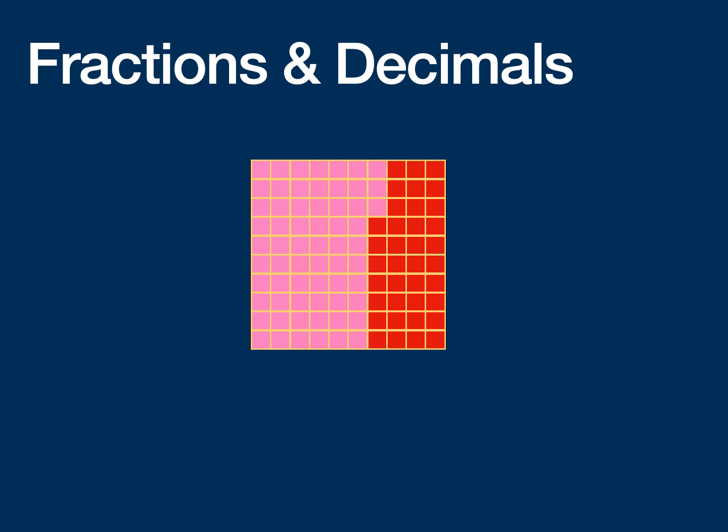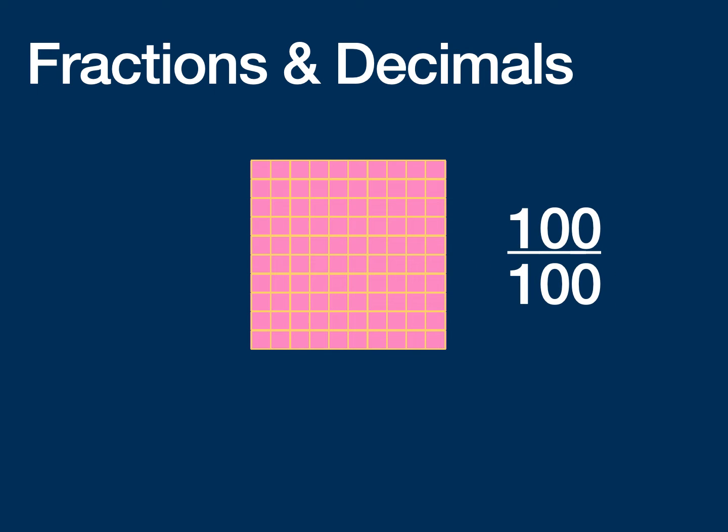And here is 73 pieces, if I'm correct. And that's 73 over 100. And of course, here's the whole thing colored in. So that is 100 over 100, one hundred hundredths.